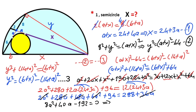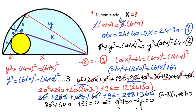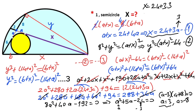Dividing both sides by 8 gives a squared plus 5a minus 24 equals zero. Factorizing: (a minus 3) times (a plus 8) equals zero. Therefore a equals 3 or a equals negative 8. Since length cannot be negative, a equals 3 units. Therefore, if a equals 3 units, x equals 33 units.